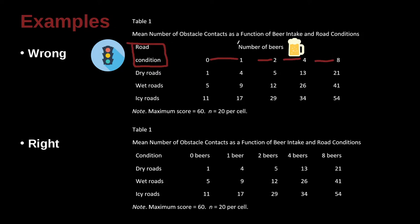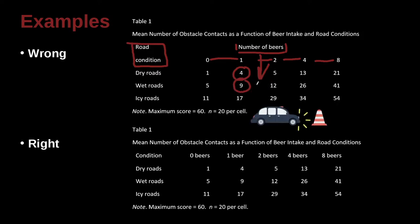But the problem here is that if this was the heading of a column, it should be telling us what's going down here. But actually that's not true, because these numbers are not beers. These numbers are obstacles hit, a mean number of obstacles contacted. This is getting very confusing. So I think this tried, this user tried to put a heading on here to cover all of these numbers, but that didn't make much sense.